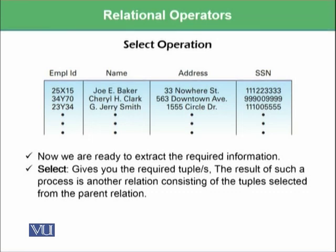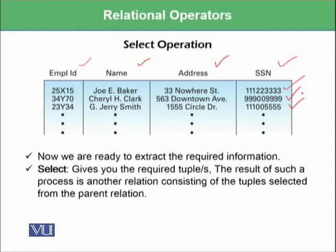One of the operators is the select operator, or select operation. For example, we have the same employers table having employee ID, name, address, and social security number. The select operation will give you the required tuples. If you want the employee having employee ID 25X15, you will be given only that tuple. If you need all employees, you will be given all the information. When you perform the select operation, a new table is formed containing all the required tuples you demanded.